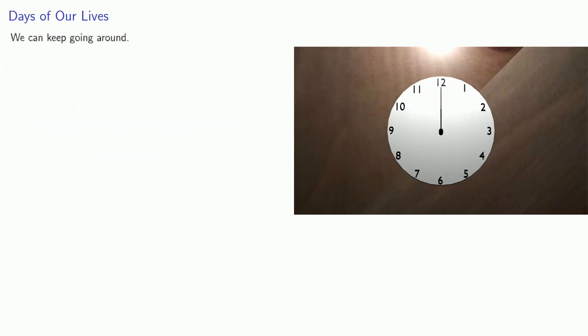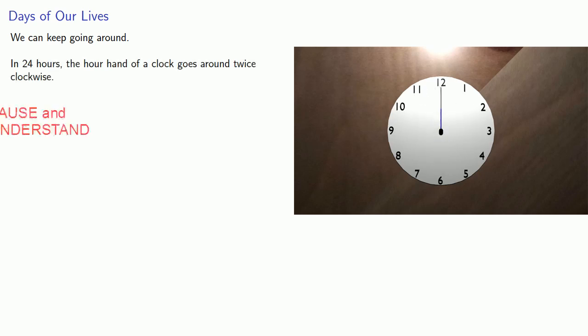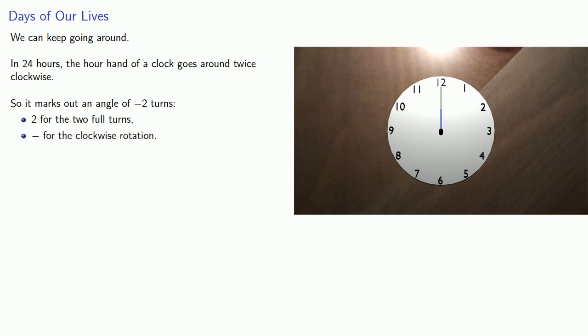Now if we're on a clock, we can keep going around. For example, in twenty-four hours, the hour hand of a clock goes around twice clockwise. So it marks out an angle of minus two turns. Two, because it's two full turns, and minus for the clockwise rotation.